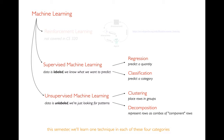We've been learning about regression, which is where we want to predict a quantity. And so we're going to be learning about the other most common kind of supervised machine learning — how do we predict a category? And that's called classification.